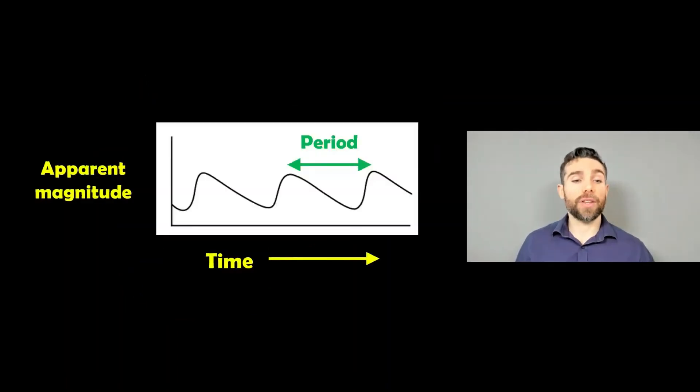So it would look something like this. If we had the apparent magnitude, now the apparent magnitude is how bright we actually see the star in the sky. If we were to measure that over time, it would look a little bit like this. You'd see it getting brighter, then dimmer, then brighter. And it has a regular pattern.